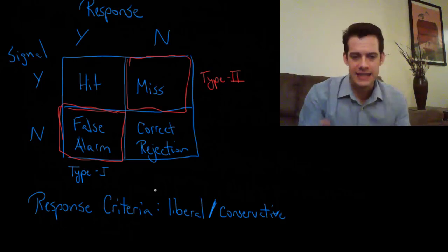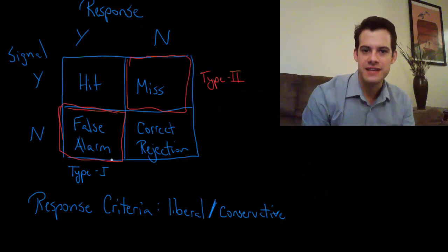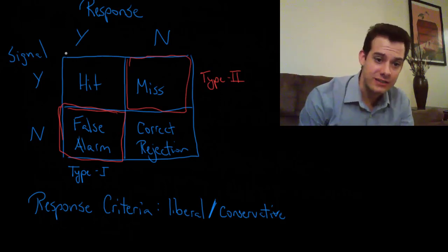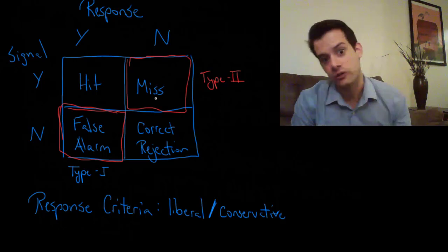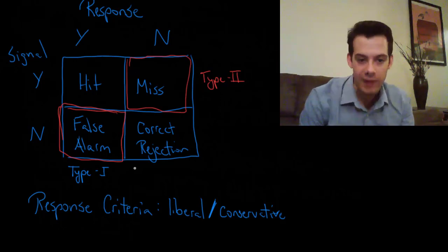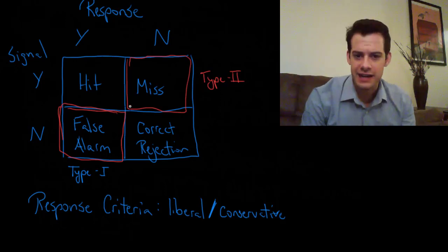The same ears could give us different answers and we might have to think about which of these errors is going to be worse. Do I want more false alarms? If I lean towards yes I'm going to get all the hits but I'm going to have more false alarms. If I lean towards no I'm going to have more correct rejections but I'm also going to have more misses and I might have to think about which of those is better. And this brings us to applications of signal detection theory.